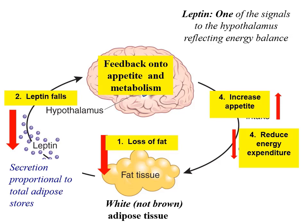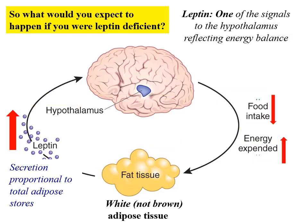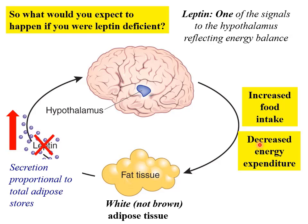What would you expect to happen if you were leptin deficient? In the normal system, fat tissue produces leptin, which feeds back onto the hypothalamus to control food intake and increase energy expenditure. If we get rid of leptin, this feedback disappears: food intake is no longer suppressed, energy expenditure is decreased, and the combination increases the amount of fat you have. So you'd expect to have a lot of fat — and that's just what the ob/ob mice had.